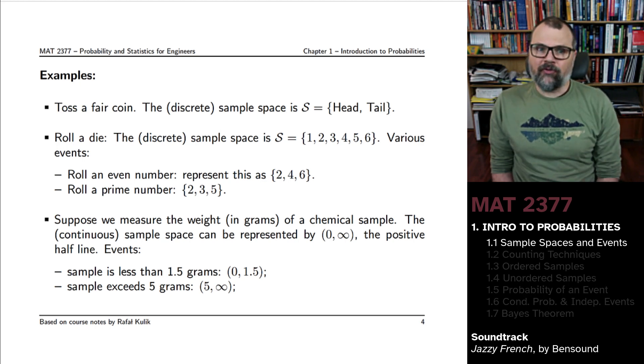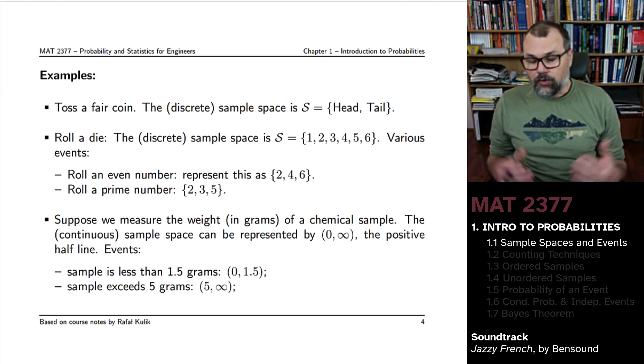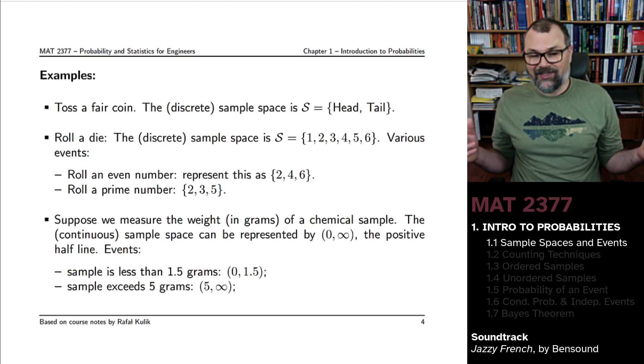Here's another experiment. You might roll a die. The discrete sample space in this case would be the possible results of the experiment. And if you roll a die, you can get one, two, three, four, five, six - assuming you're working with a regular six-sided die.